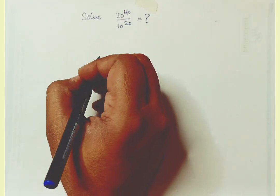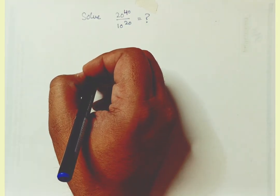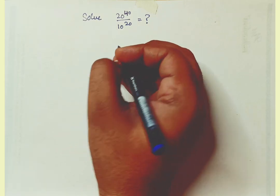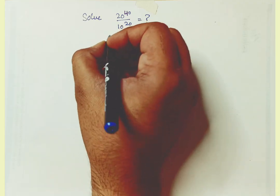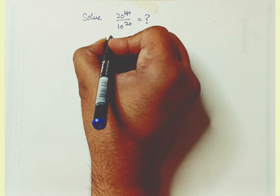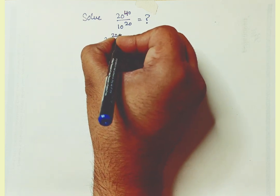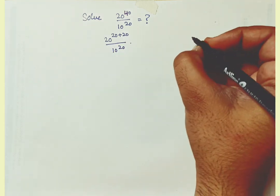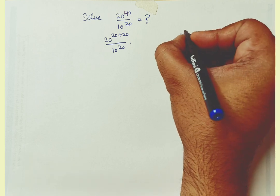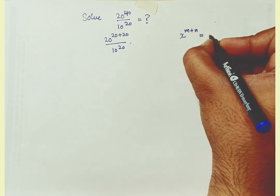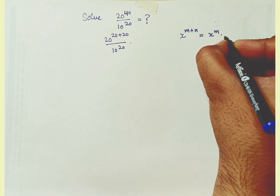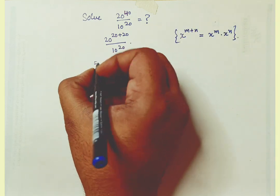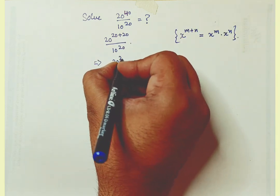In this question we have to solve the value of 20 raised to power 40 upon 10 raised to power 20. We can write this as 20 raised to power 20 plus 20, upon 10 raised to power 20. Using the rule x raised to power m plus n equals x raised to power m into x raised to power n, we substitute this value of 20 raised to power 20.